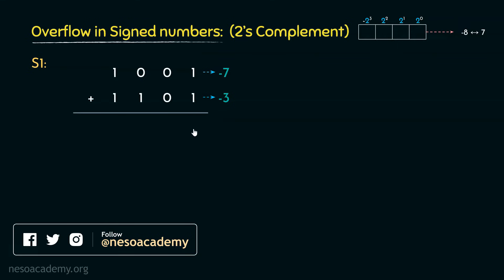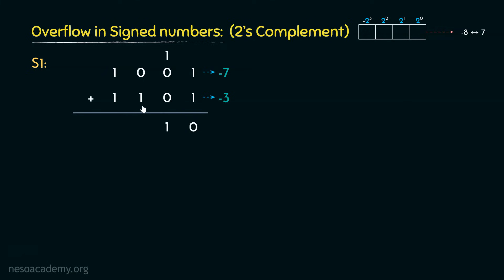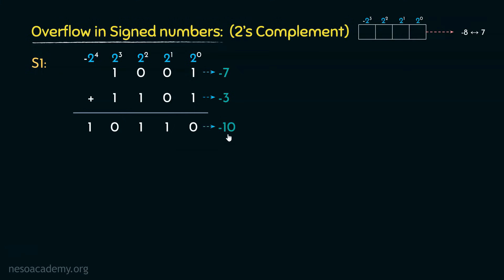Performing the addition: 1+1 gives 0 carry 1; 1+0+0 gives 1; 0+1 gives 1; 1+1 gives 1 0. The computer can't store this in 4-bit space. Interpreting the 5-bit result in 2's complement, the MSB represents minus 2 to the power 4, giving minus 16 plus 6 equals minus 10. That is the correct result of minus 7 plus minus 3, so in this instance the carry is determining the overflow.